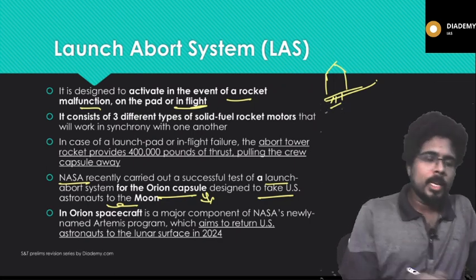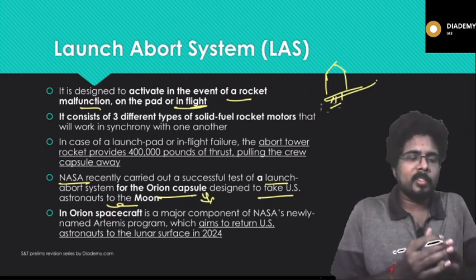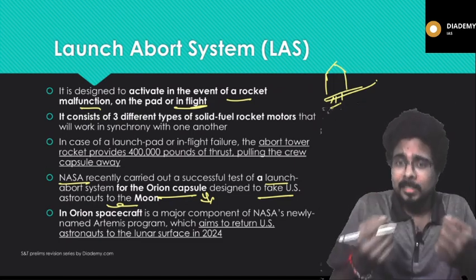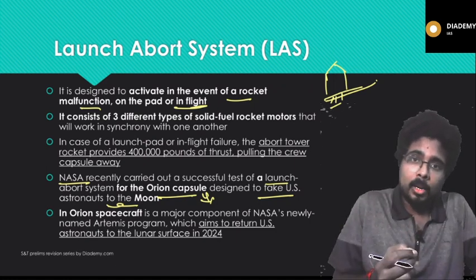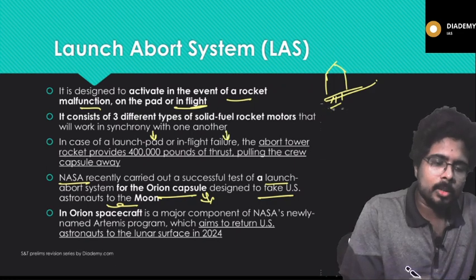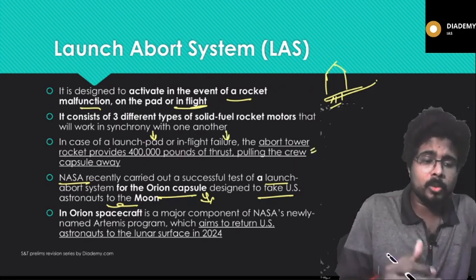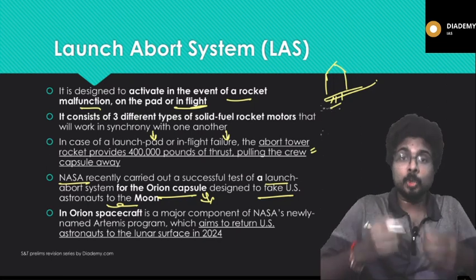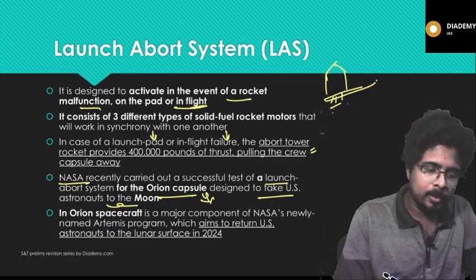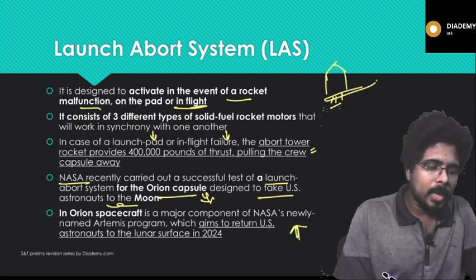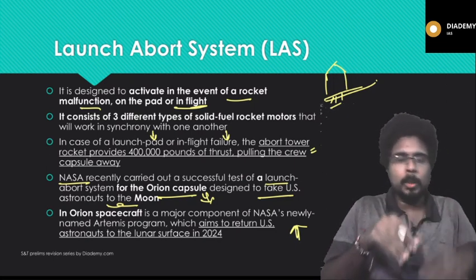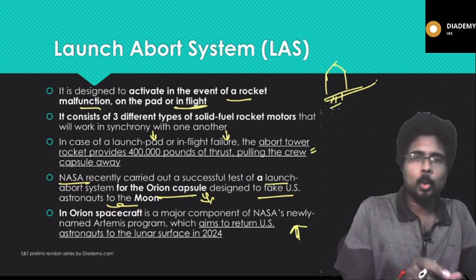In case of a launch pad or in-flight failure, the abort tower rocket provides 400,000 pounds of thrust, pulling the crew capsule away safely. The Orion spacecraft is the major component of NASA's newly named Artemis program, which aims to return US astronauts to the moon in 2024.